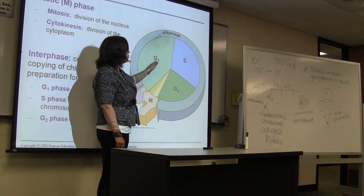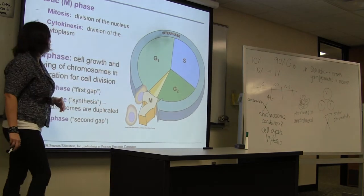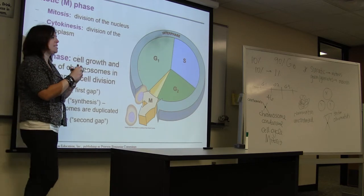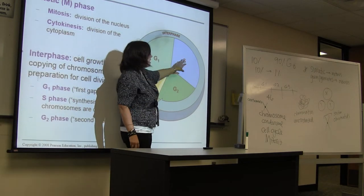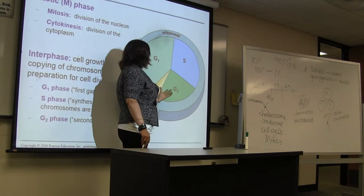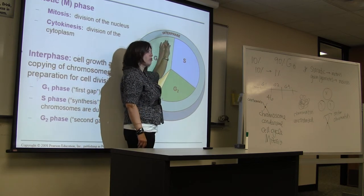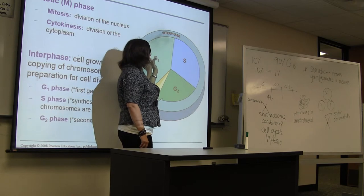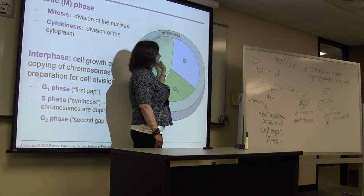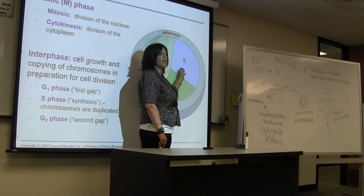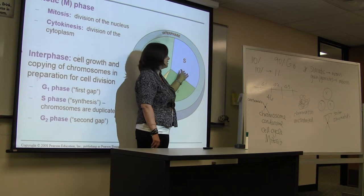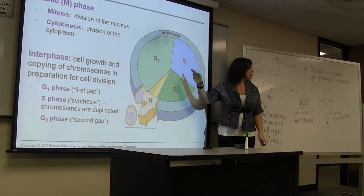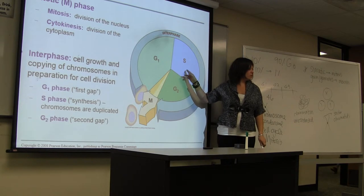The G1 phase is considered a growth phase. The cell is getting ready to replicate the DNA. During G1, the cell is growing and getting everything ready for cell division. The next phase is the S phase — this is the synthesis phase, where your DNA is going to be replicated; this is where you make a copy of your DNA.